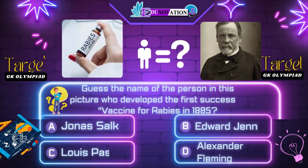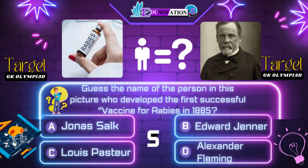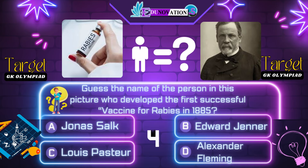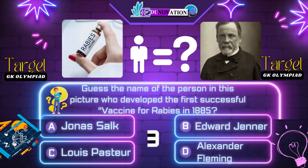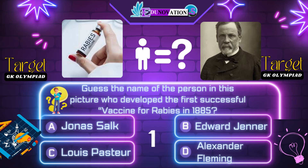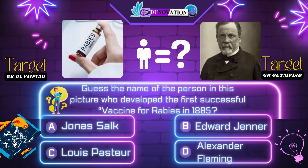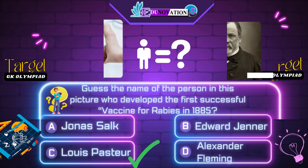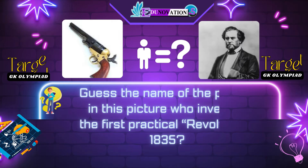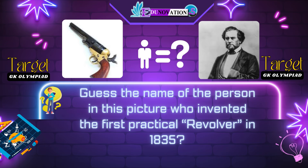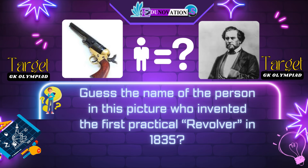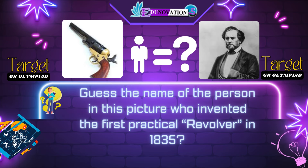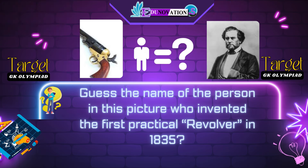Next question. Guess the name of the person in this picture who developed the first successful vaccine for rabies in 1885. Your options are: A. Jonas Salk, B. Edward Jenner, C. Louis Pasteur, D. Alexander Fleming. Time's up. Correct answer is C. Louis Pasteur.